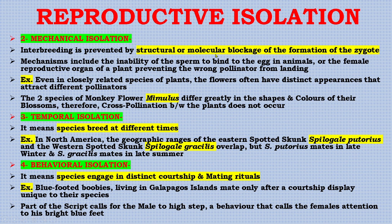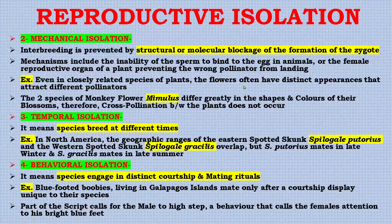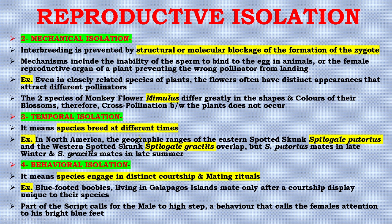Next is mechanical isolation, in which interbreeding is prevented by structural or molecular blockage preventing formation of the zygote. Mechanisms include the inability of sperm to bind to the egg in animals, or female reproductive organs of plants preventing the wrong pollen from landing. For example, two species of monkey flower differ greatly in the shapes and colors of their blossoms, so cross-pollination between the plants does not occur.